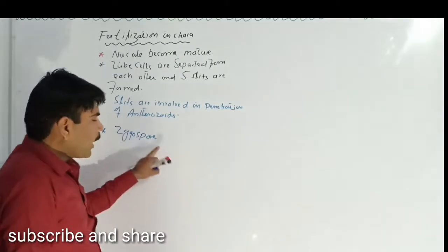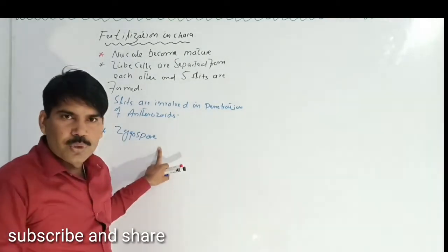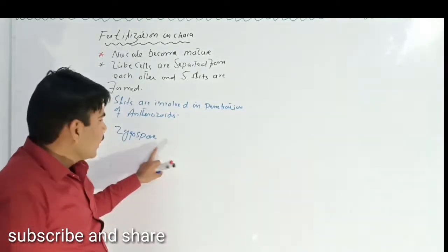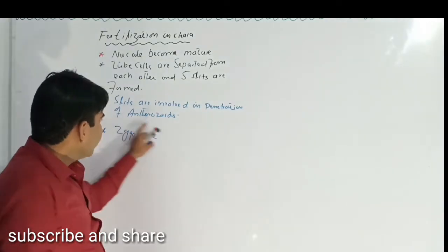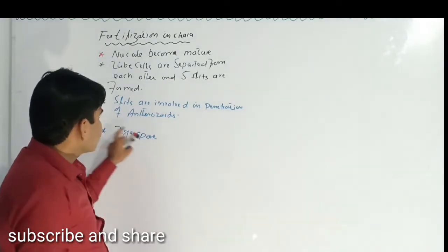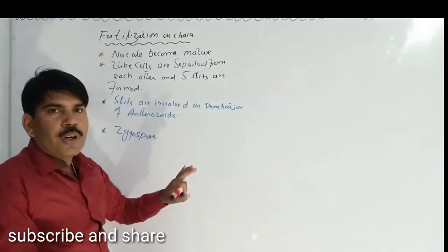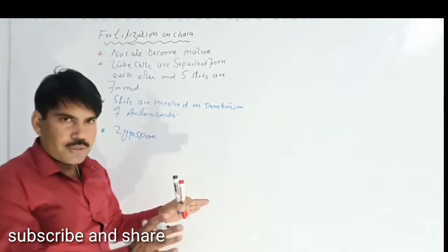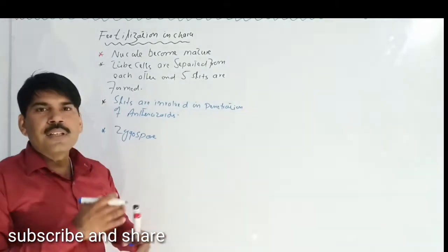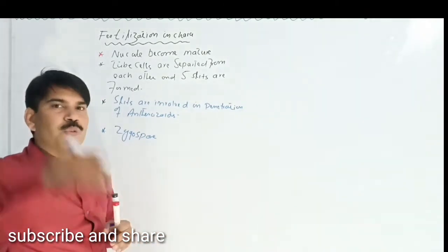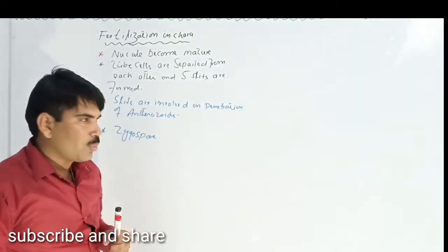When this diploid zygospore is formed, it is time for the release of the zygospore from the nucule structure, and then it will germinate to produce a new plant.